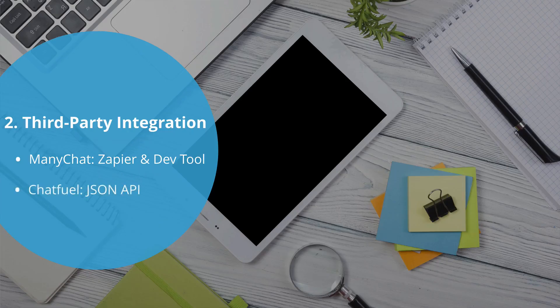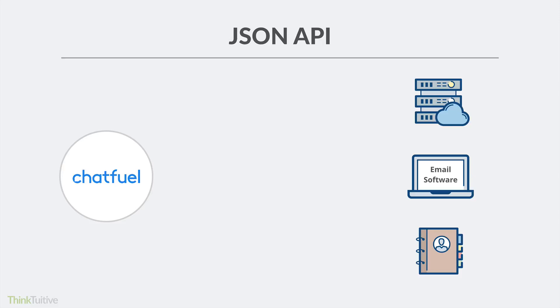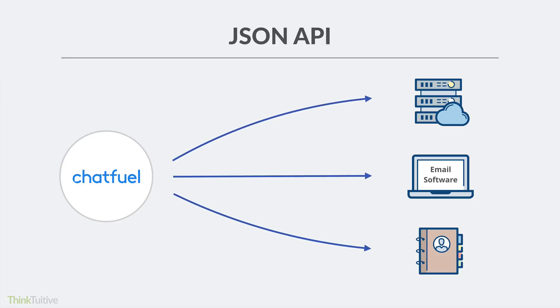Chatfuel, on the other hand, does not have a direct built-in Zapier integration. They have something called a JSON API that allows you to connect to third-party tools and databases. It's pretty much comparable to ManyChat's DevTools, with a few minor differences. This JSON API will also allow you to transfer data from Chatfuel to an external database and third-party tools like your email marketing or CRM. Again, you can use Zapier to create these webhooks, but it can get a little pricey and requires a bit of setup and configuration.